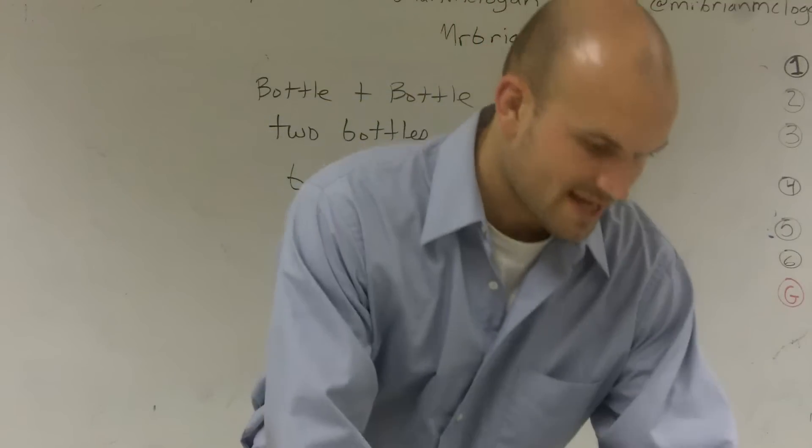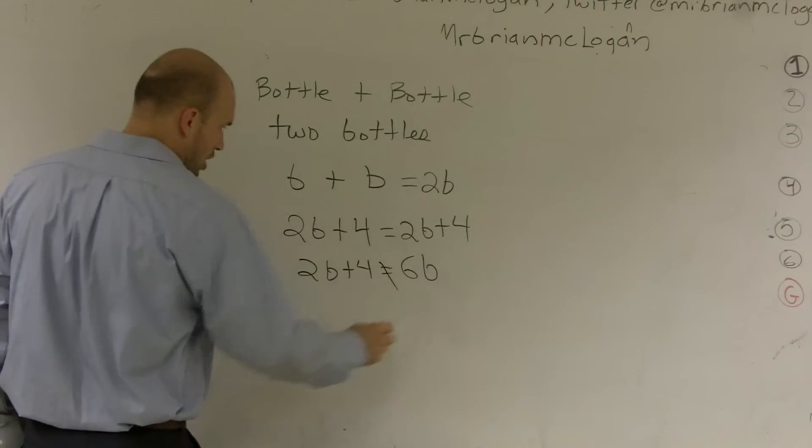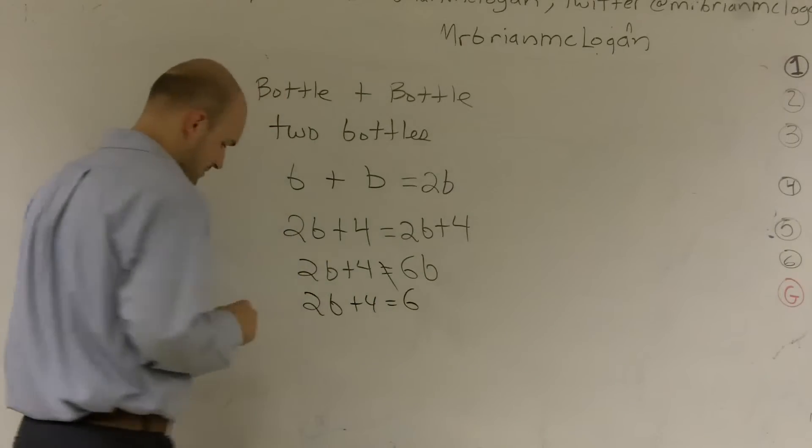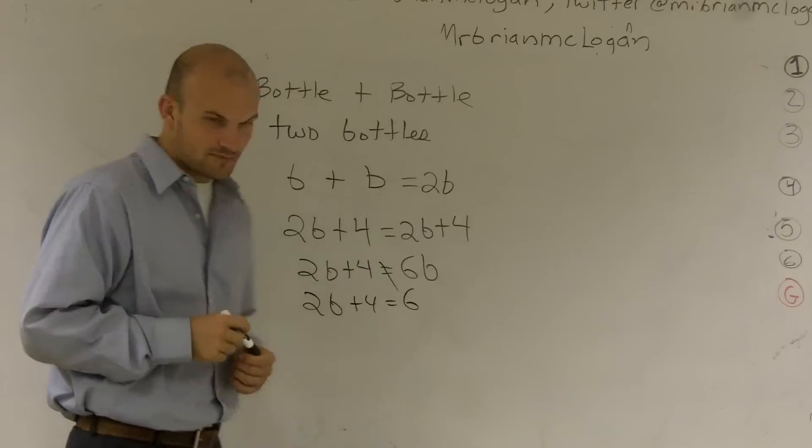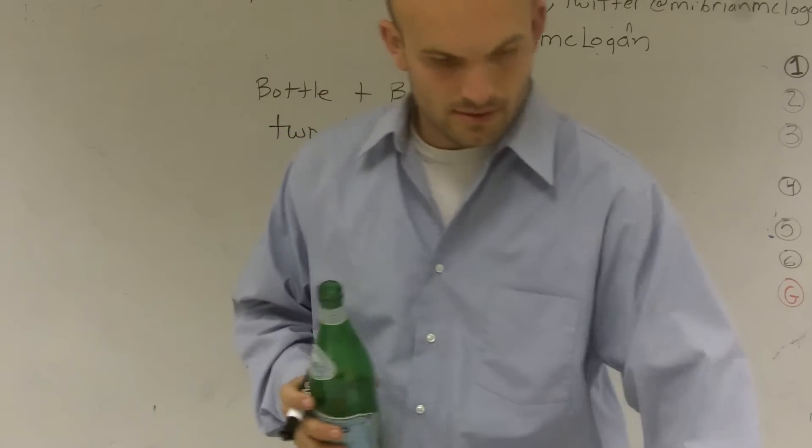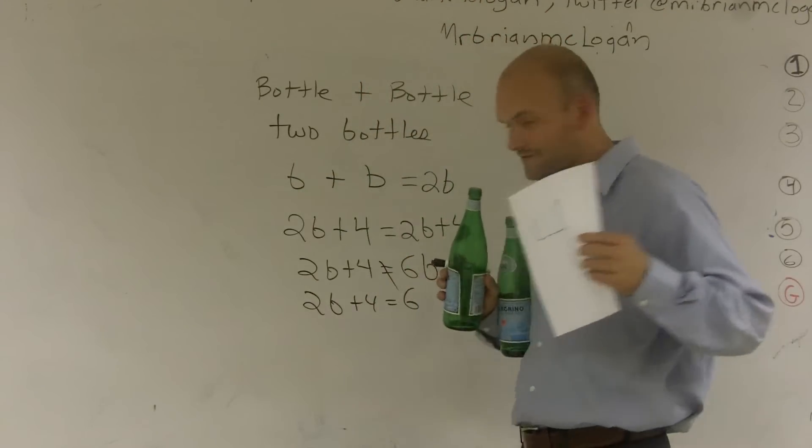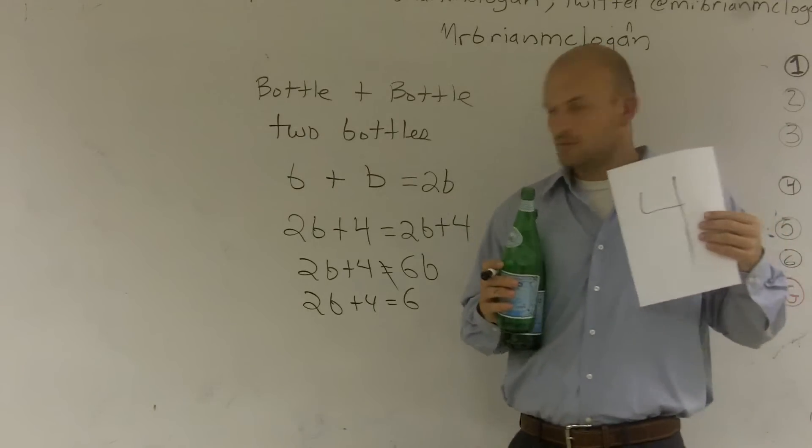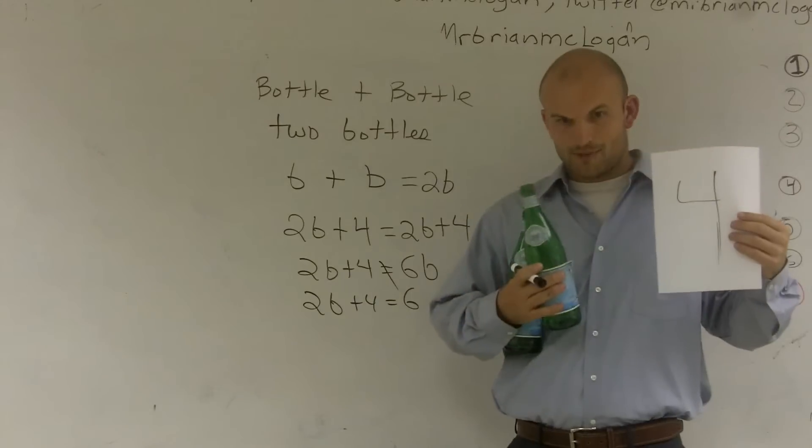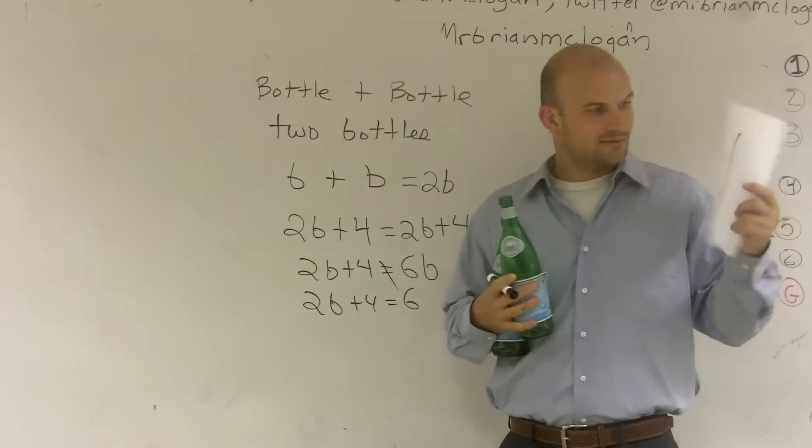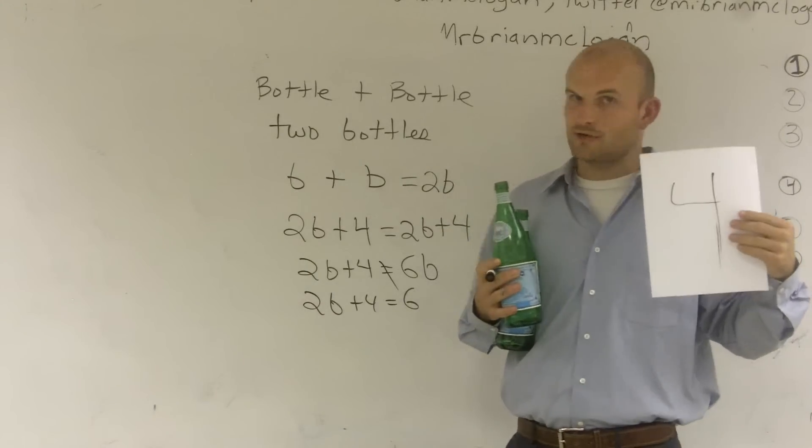The other mistake is, so that's wrong, 2b plus 4 equals 6. So again, I have two bottles plus 4. Two bottles plus 4, and then they tell me that I have equal to 6. Well, what happened to my bottles? I still am holding bottles here. So how do two bottles plus 4 equals 6? 4's here and two bottles. They don't make 6.